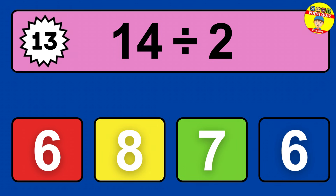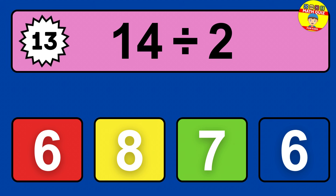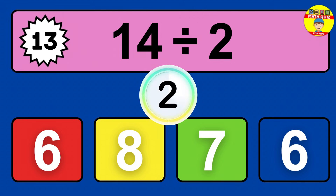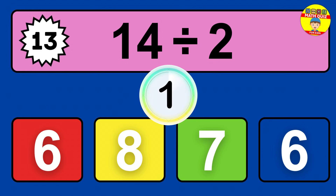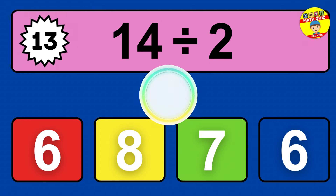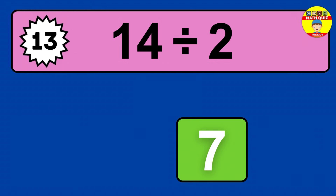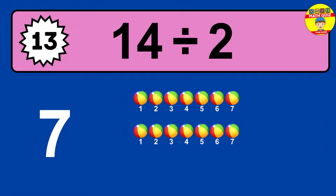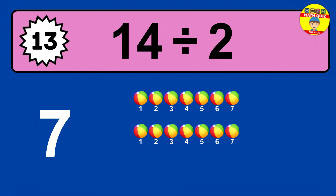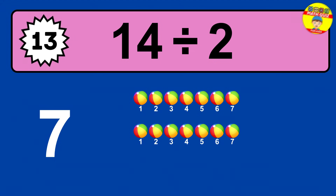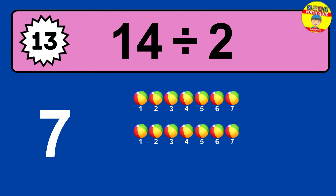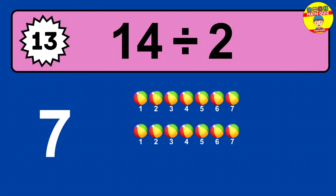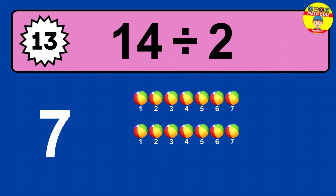14 divided by 2 — time to think. Let's go to the solution. Divide the number 14 by 2. Each group contains 2 units, so dividing 14 by 2 results in 7 equal groups. Thus, the result is 14 divided by 2 equals 7.